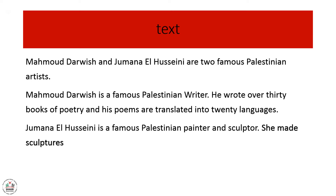Mahmoud Darwish and Jaman al-Hussaini are two famous Palestinian artists. Mahmoud Darwish is a famous Palestinian writer. He wrote over 30 books of poetry, and his poems are translated into 20 languages. Jaman al-Hussaini is a famous Palestinian painter and sculptor. She made sculptures.